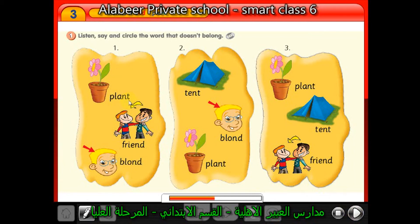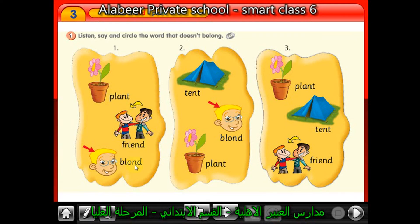The first group: the first word is 'plant', then 'friend', then 'blonde'. So these two words — 'friend' and 'blonde' — end with 'nd'. But this word 'plant' ends with 'nt'.